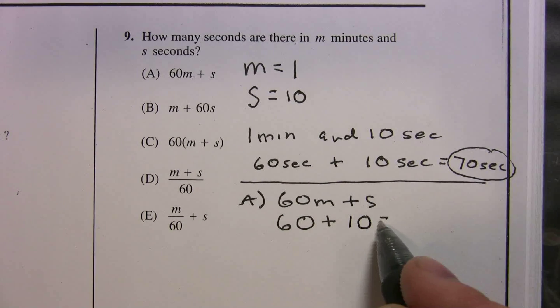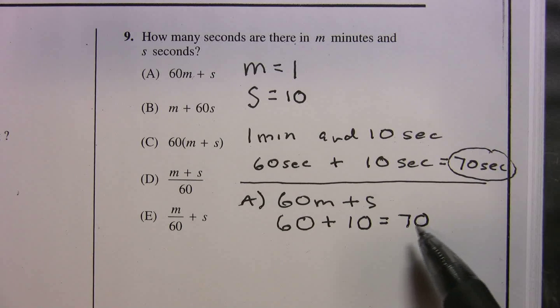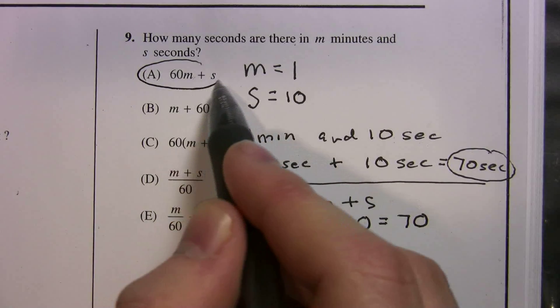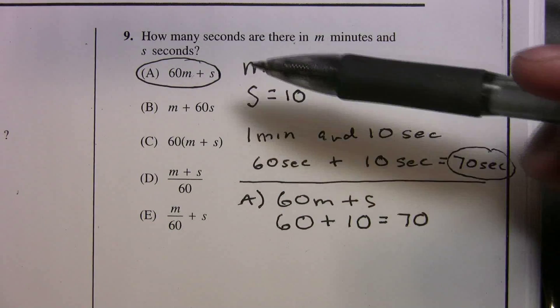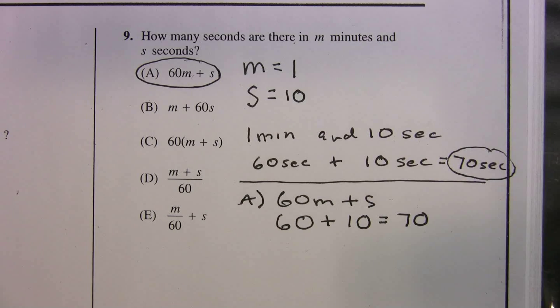So I'm just plugging back in, and what do you know? We got a little lucky here, we got it on the first try. 70, we were looking for 70. So your answer is choice A. So this is a great strategy, especially when you have all these variables in your answer choices, you can choose numbers.